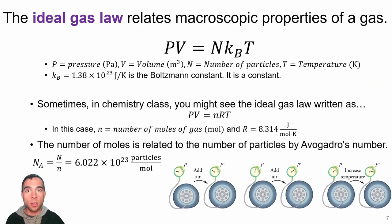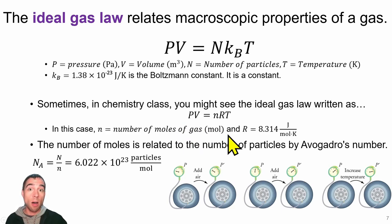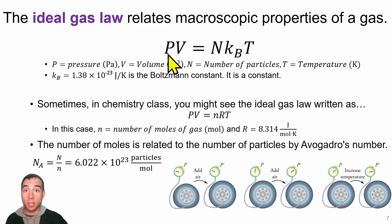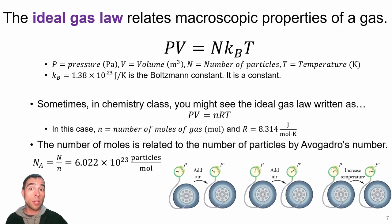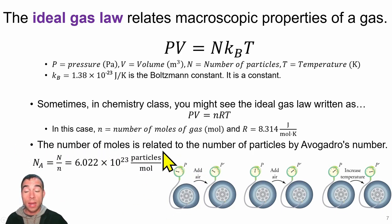You may have seen the ideal gas law in chemistry class, where it's written PV = nRT. Here, lowercase n is the number of moles of gas particles, and R is the ideal gas constant, 8.314 joules per mole Kelvin. The number of moles relates to the number of particles through Avogadro's number, which is 6.022 × 10²³ particles per mole.